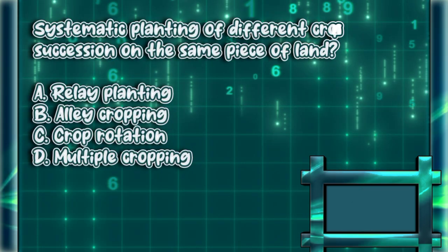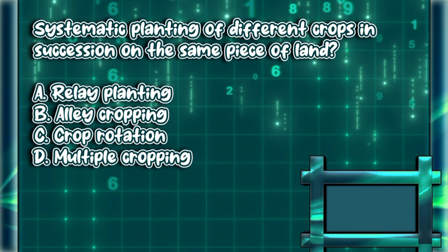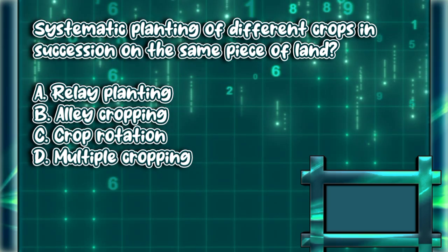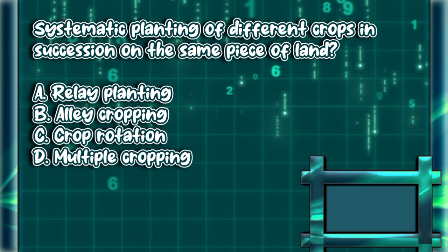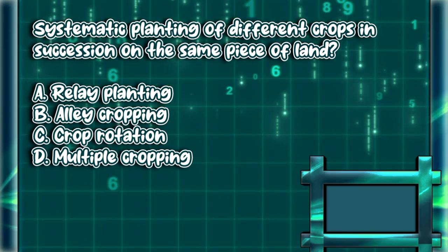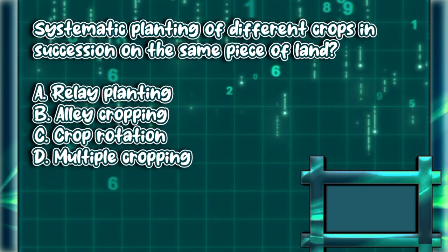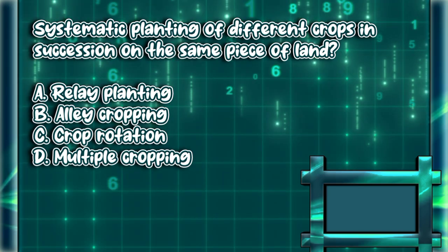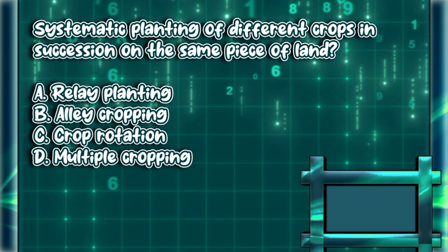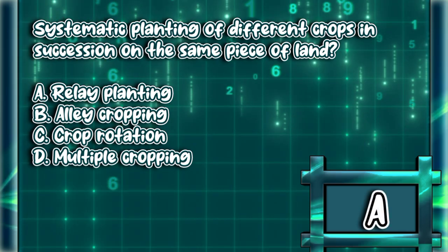Systematic planting of different crops in succession on the same piece of land. A. Relay planting. B. Alley cropping. C. Crop rotation. D. Multiple cropping. The answer is letter C.